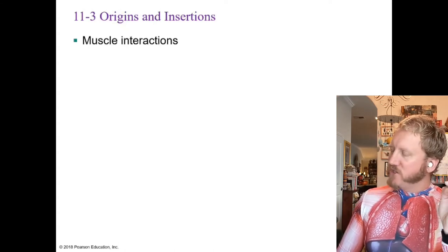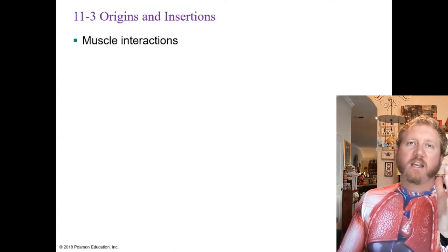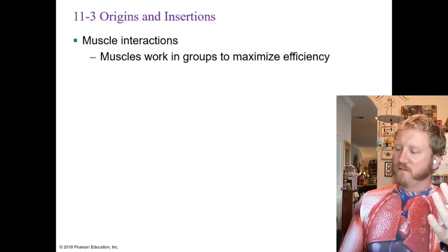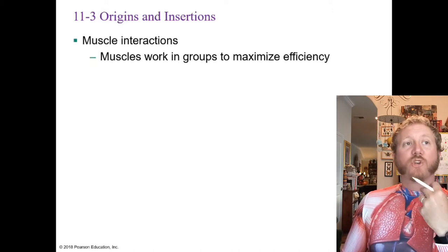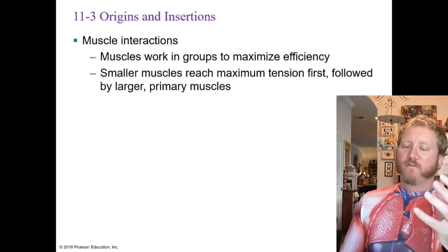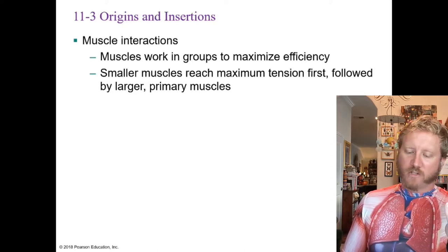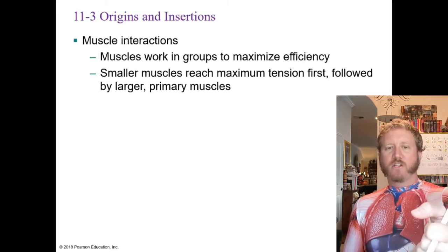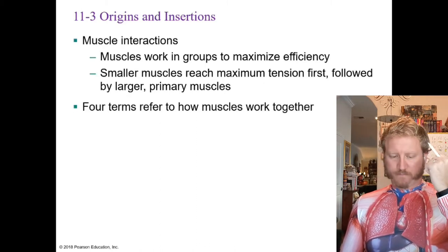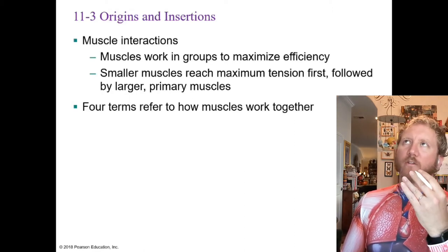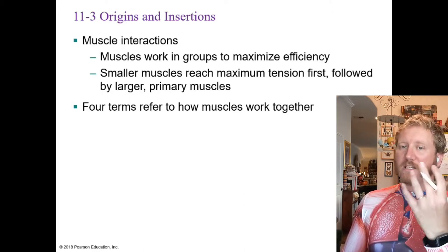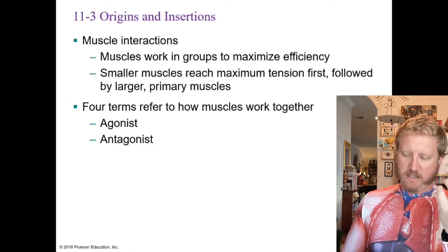Muscles work in groups to maximize efficiency. You'll typically have major muscles responsible for a movement, with smaller muscles that help. Typically the smaller muscles reach maximum tension first to get things started, then the larger muscle follows. There are four terms that refer to how different muscles work together: agonist, antagonist, synergist, and fixator.